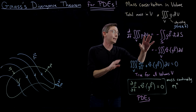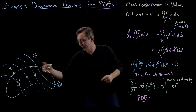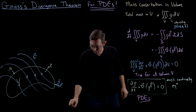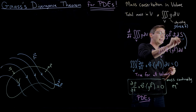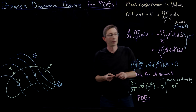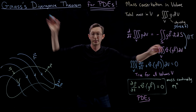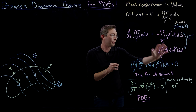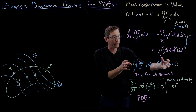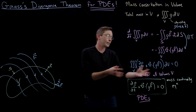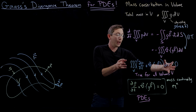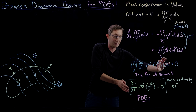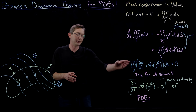Gauss's divergence theorem says we can take this surface integral integrating around the surface and write it as a volume integral for the divergence of the quantity we're computing. This step from the surface integral to the volume integral is exactly where we used Gauss's divergence theorem. That allowed us to take a quantity under one volume integral and get another expression under a volume integral, so they can be combined. Because this is true for all volumes v, you get this partial differential equation — the thing inside must equal zero if the integral equals zero for all volumes v.